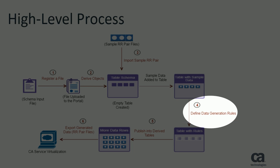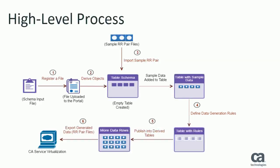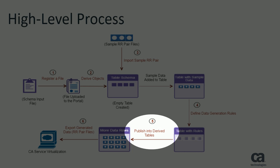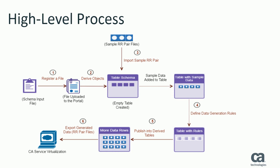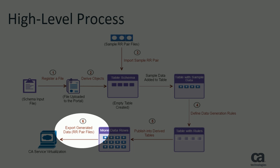The fourth step lets you define data generation rules. After you define your rules, you are ready to publish the data into the derived tables in the staging database. Finally, in the last step, you export the generated data into XMLRR pair files and push those RR pair files into the virtual service in CA Service Virtualization.